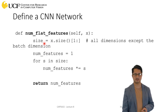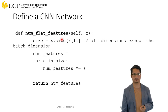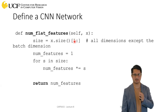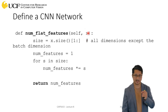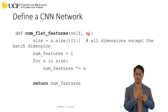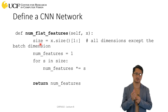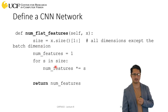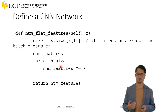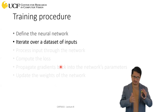The helper function num_flat_features uses x.size() to get the shape, slices off the first axis (batch size), and multiplies the remaining dimensions together — so for shape 10x16x6x6 (batch of 10), it ignores the 10 and returns 16*6*6. This is a simple helper and you can have as many helper functions as you need in your architecture.